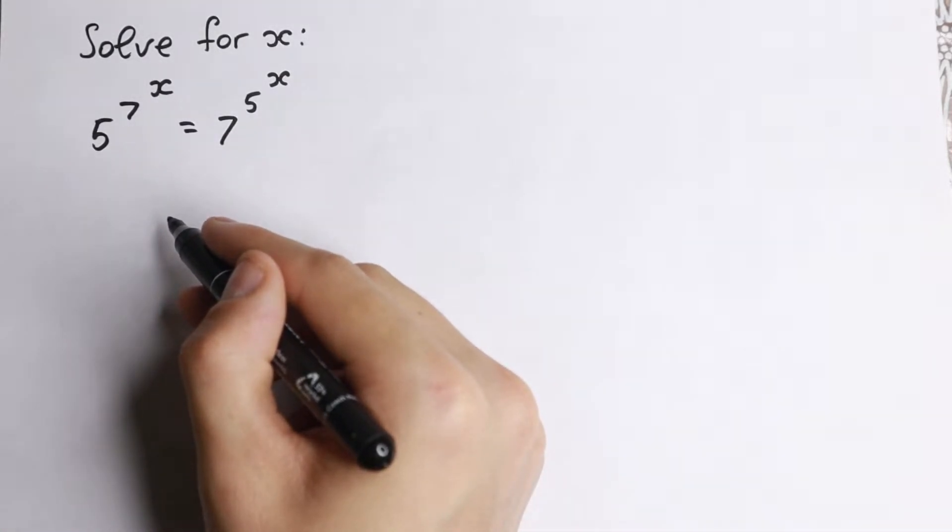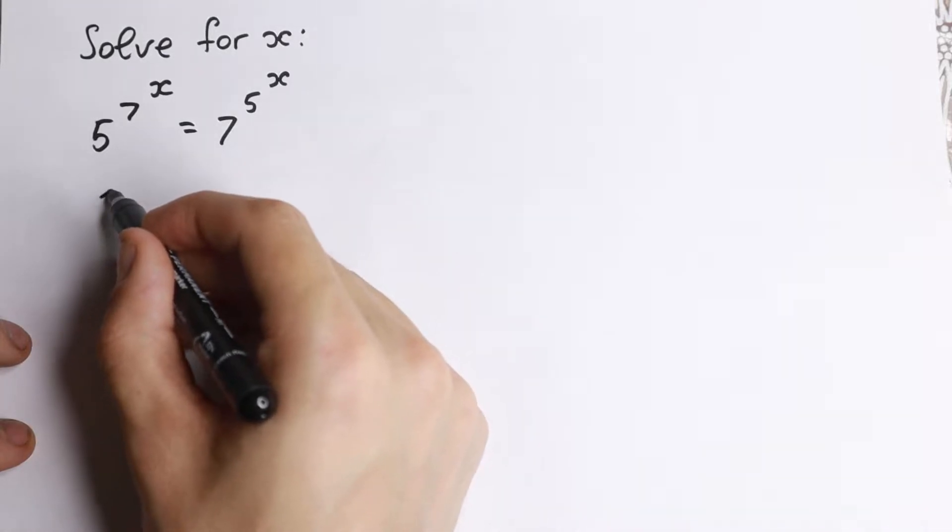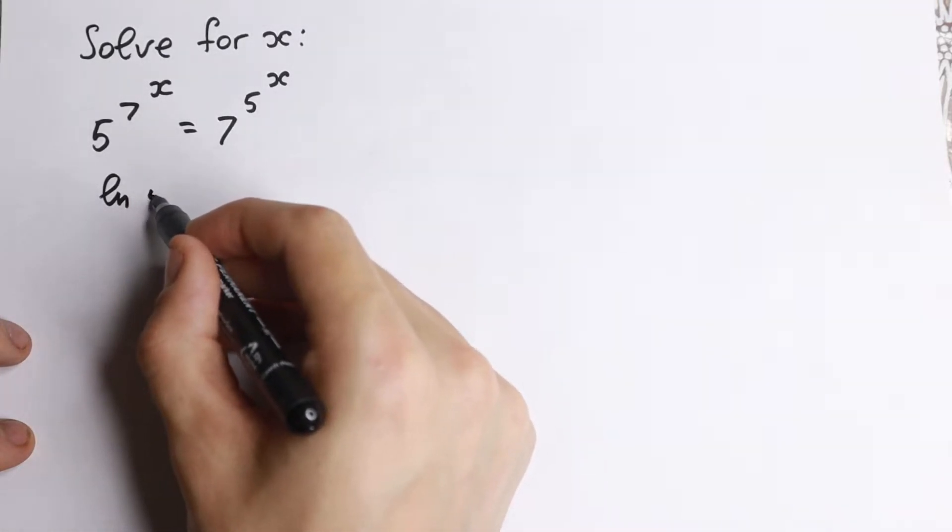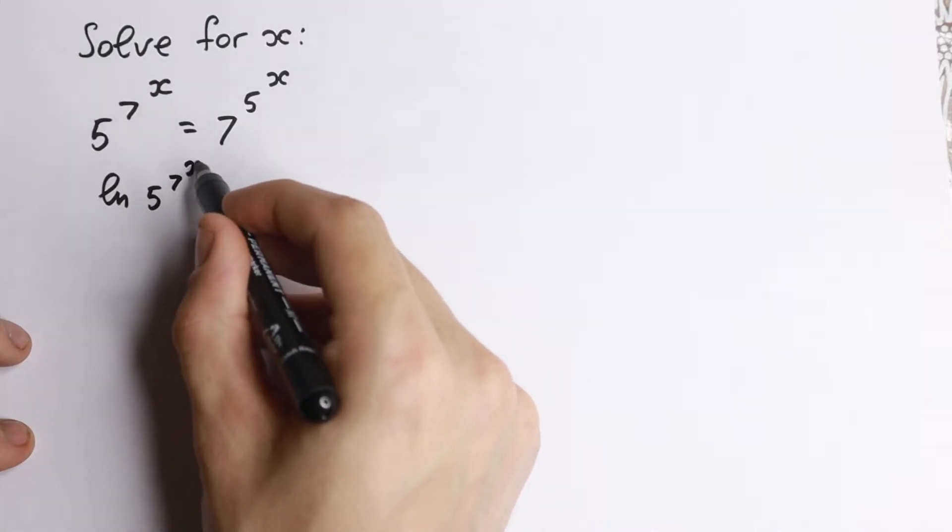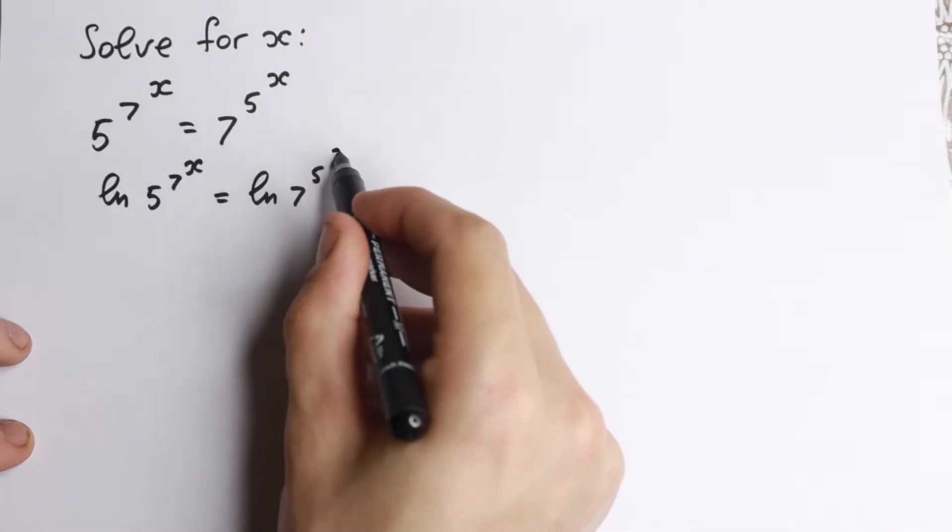How can we do this? Of course, the best way to solve it is to take log on both sides. So let's do this. If we take log on both sides, we will have natural log of 5 to the power 7 to the power x equal to natural log of 7 to the power 5 to the power x.